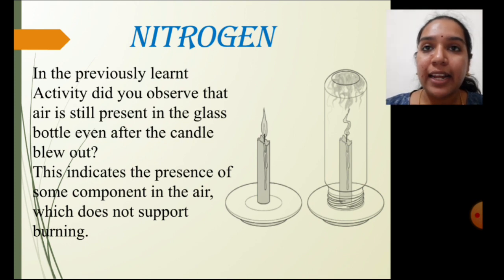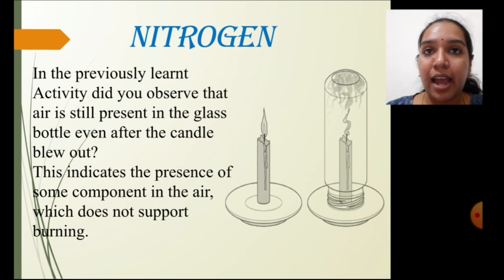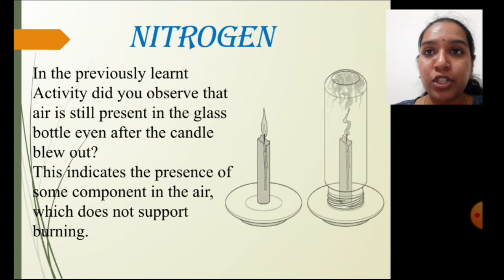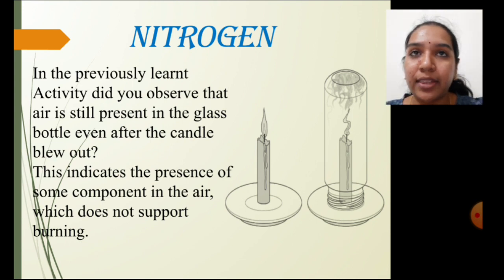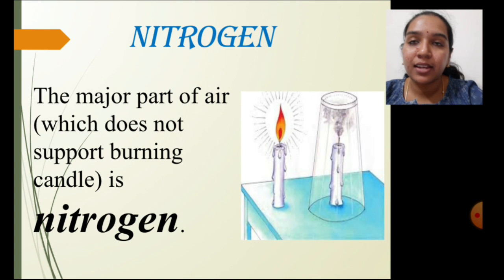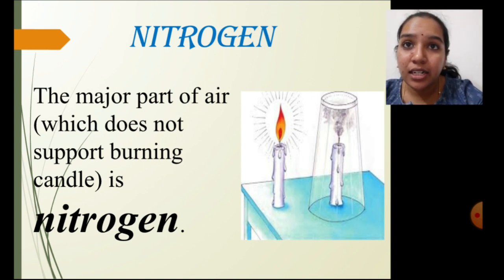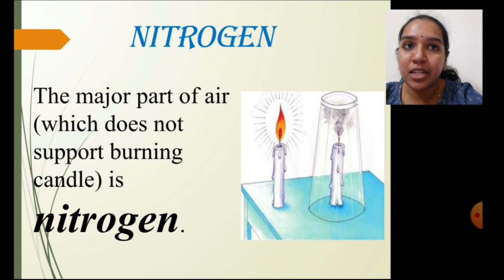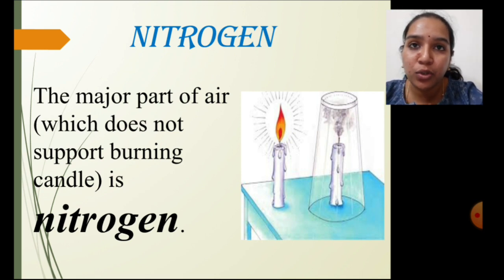In an activity while learning about oxygen, we observed that air is present in the glass bottle even after the candle blew out. This means the presence of oxygen supports burning, but in the absence of oxygen, some other component in the air is present that does not support the burning of the candle. That other element is nitrogen, which occupies about 78 percent of the total air composition, and this gas does not support burning.